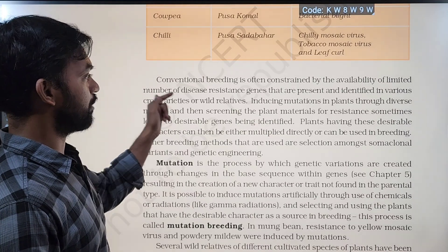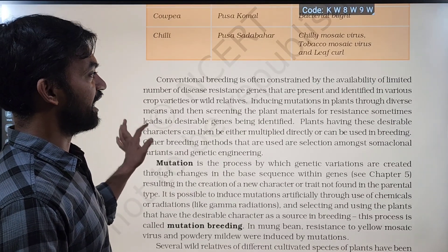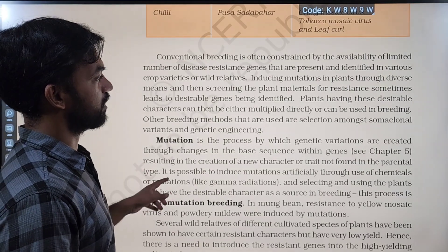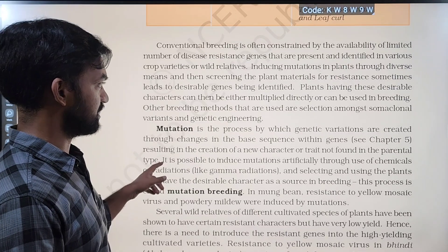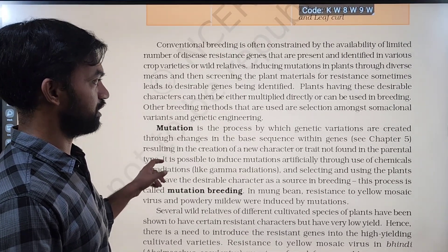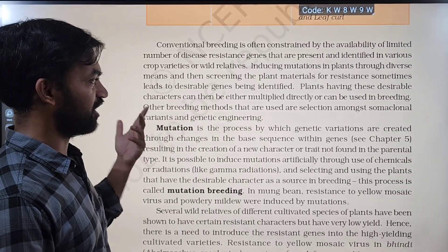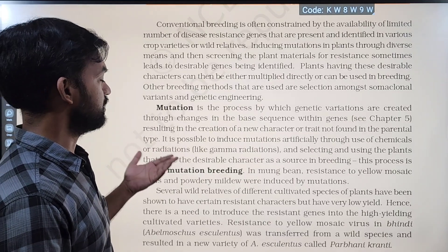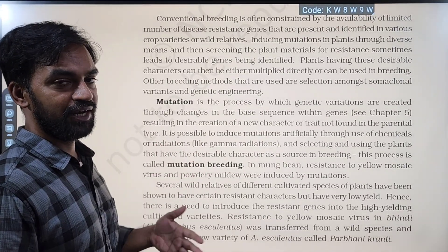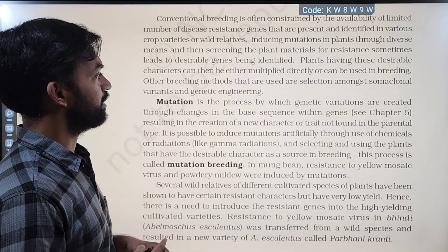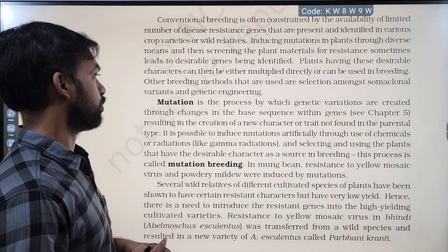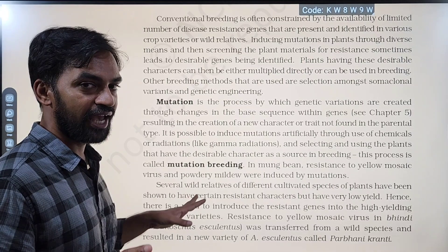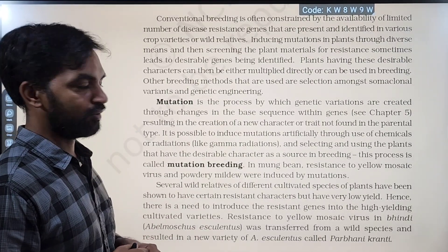Through conventional method, the available number of disease resistant genes present and identified in various crop varieties or wild relatives is limited. Inducing mutations in plants through diverse means and then screening the plant material for resistance sometimes leads to desirable genes being identified. Other breeding methods that are used include selection amongst somaclonal variants and genetic engineering.